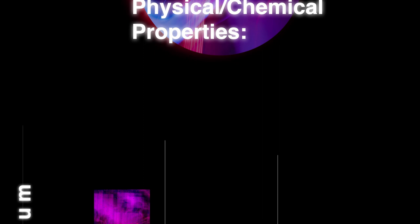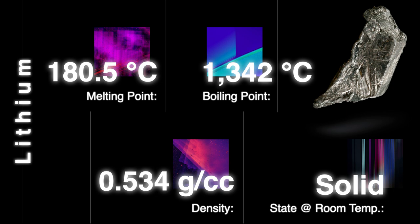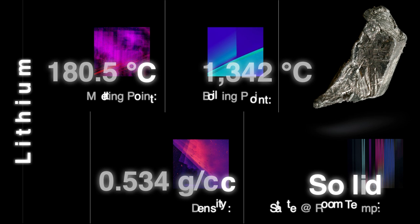Lithium has a melting point of 180.5 degrees Celsius and a boiling point of 1,342 degrees Celsius. Its density is 0.534 grams per cubic centimeter, which is the lowest of all metals. At room temperature, lithium is a solid. Its color is a shiny silvery white. It has a smooth texture, is soft, and has no odor.